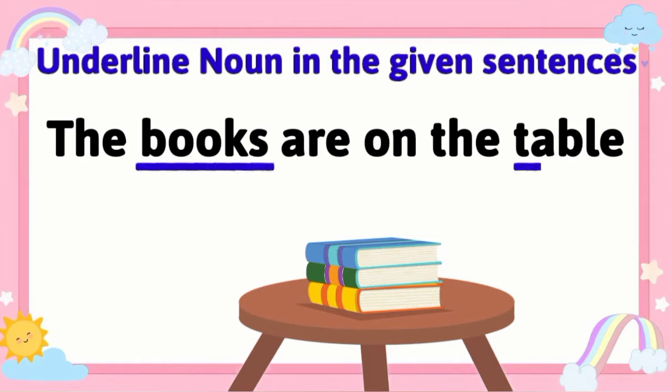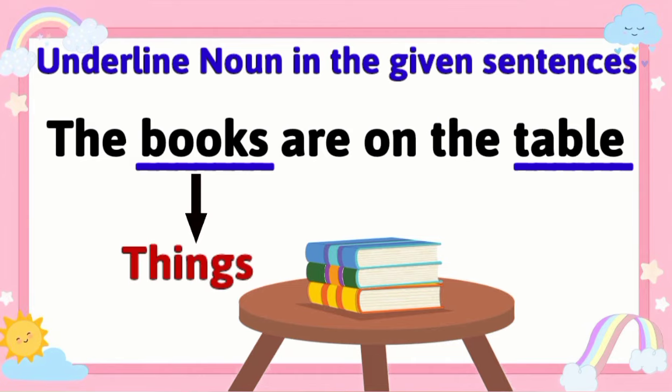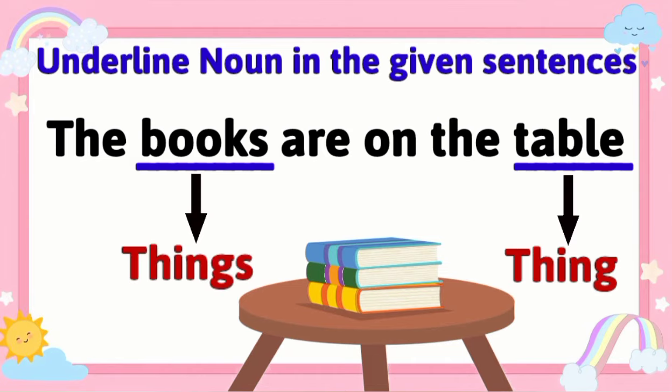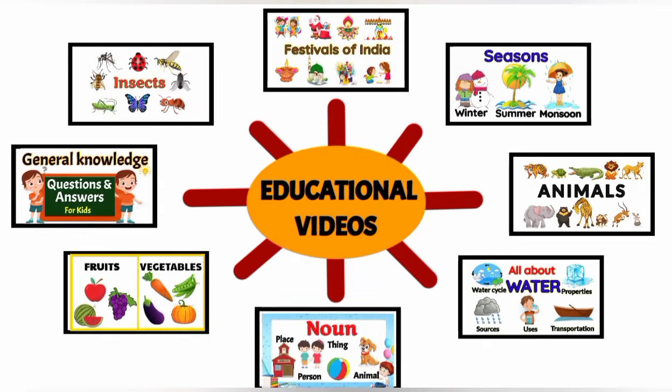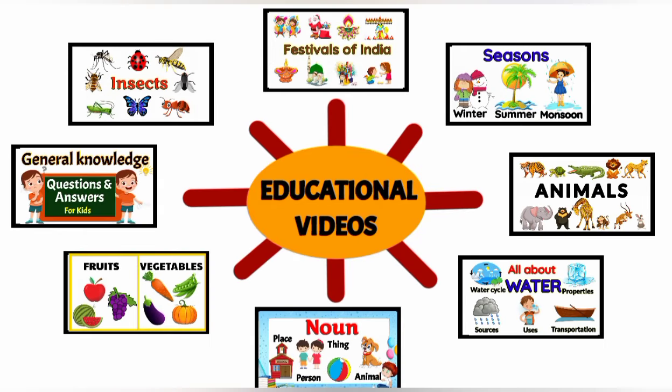'The books are on the table.' In this sentence, the words books and table are both nouns. Books and table are both the names of things. Thank you for watching.